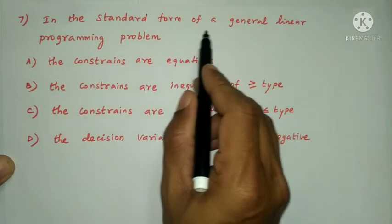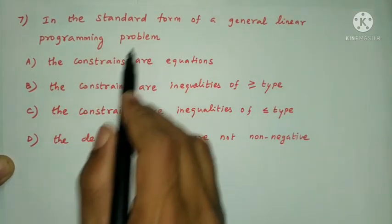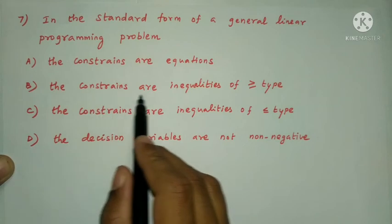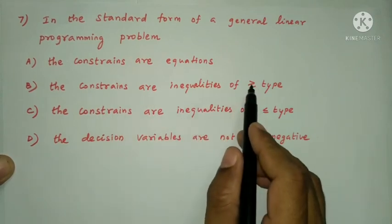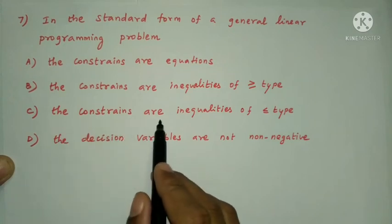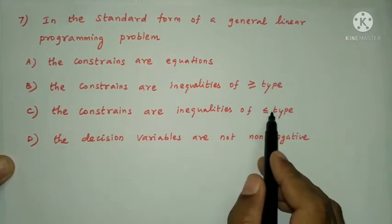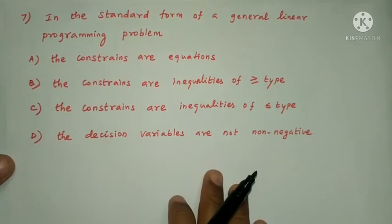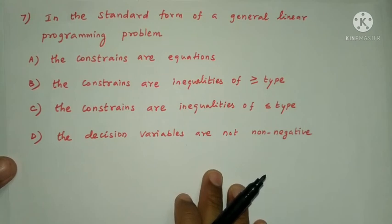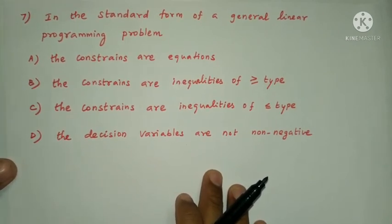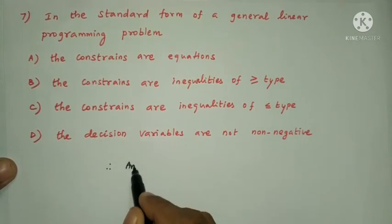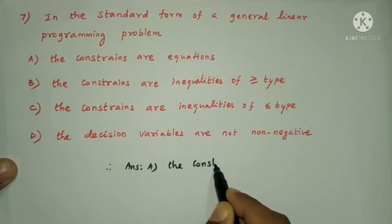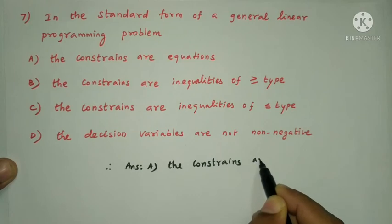Next question: in the standard form of a general linear programming problem, what is true? Option A: all constraints are equations. Option B: constraints are inequalities of greater than or equal to type. Option C: less than or equal to type. Option D: decision variables are not non-negative. The answer is Option A — in standard form of LPP, the constraints are equations.